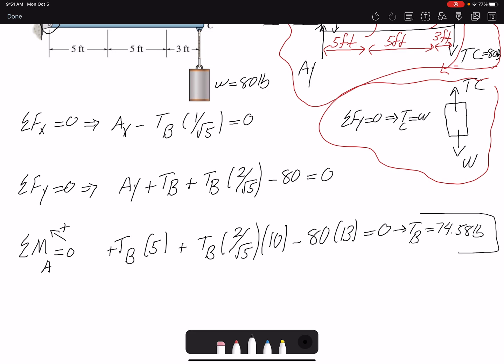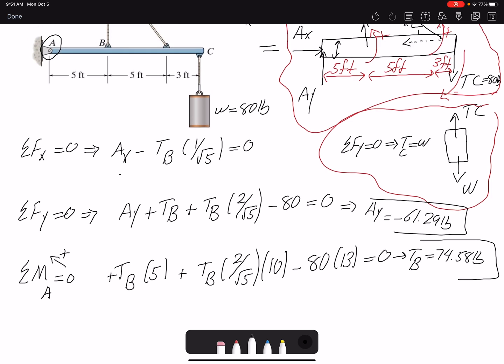If I replace TB into my other equations here, this equation will give me the value of Ay, which would be negative 61.29 pounds. And also if I plug in here, I can find Ax, which would be 33.35 pounds.